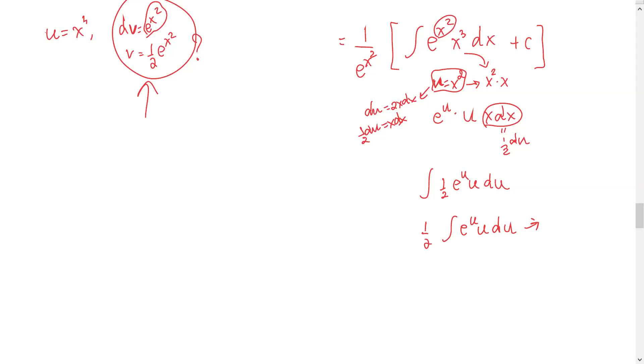Do you recall the tabular bypass? The special case of the bypass, that when the u or the term that you can find the derivative is a polynomial form, you can use a tabular bypass. So the left column, the one that you are going to find the derivative, the right column, you are going to find the antiderivative.